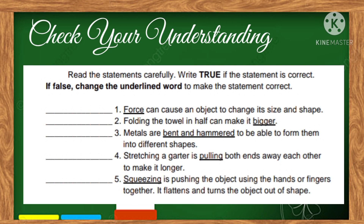Let's now check your understanding. Read the statements carefully. Write true if the statement is correct; if false, change the underlined word to make the statement correct. One: force can cause an object to change its size and shape. Two: folding the towel can make it bigger. Three: metals are bent and heated to be able to turn them into different shapes. Four: stretching the rubber band is pulling both ends away from each other to make it longer. Five: squeezing is pushing the object using hands or fingers together — it flattens and turns the object out of shape.